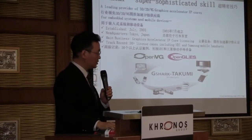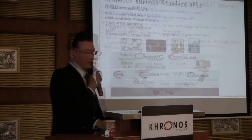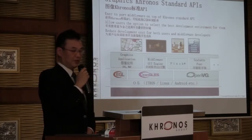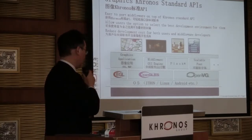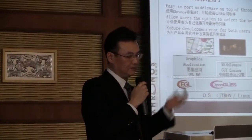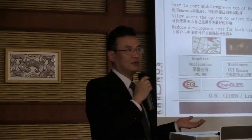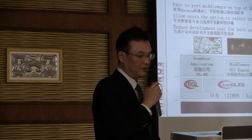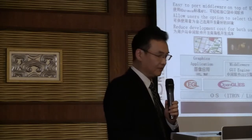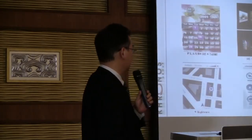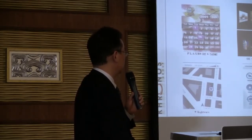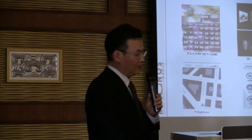We are just a 10-year-old company. The Khronos graphics standard API is beneficial, and lots of people have an option to select the best development environment, like directly using OpenVG API or using middleware like a GUI engine, Flash, SVG. OpenVG applications include GUI implementation, font rendering, and map rendering.